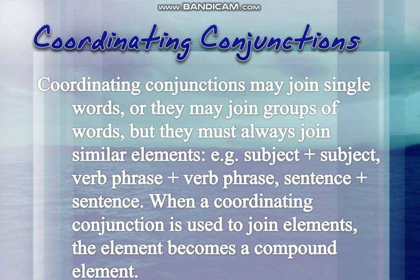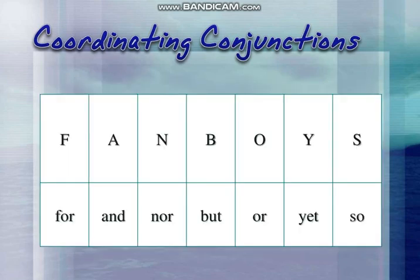Coordinating conjunctions may join single words or groups of words, but they must always join similar elements — that is, subject with subject, word with word, phrase with phrase, or sentence with sentence. When a coordinating conjunction joins elements, those elements become a compound element — something made up of two or more things. The coordinating conjunctions are: for, and, nor, but, or, yet, so.